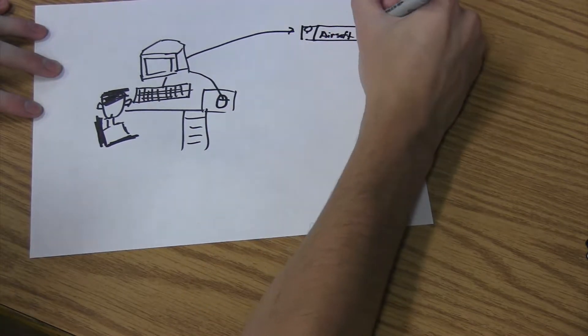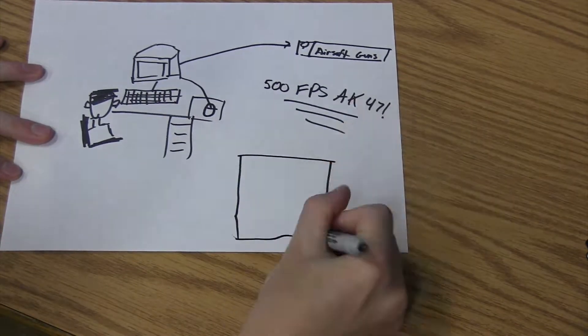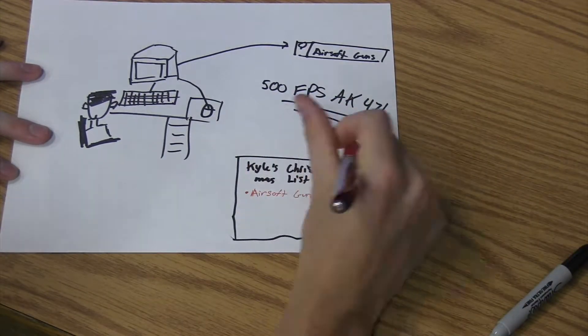Both guns had powerful ratings of 500 fps which means feet per second. So we added them to our Christmas list and anxiously waited.